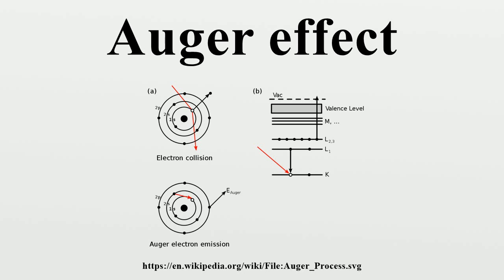Auger electron spectroscopy involves the emission of Auger electrons by bombarding a sample with either X-rays or energetic electrons and measures the intensity of Auger electrons as a function of the Auger electron energy. The resulting spectra can be used to determine the identity of the emitting atoms and some information about their environment.